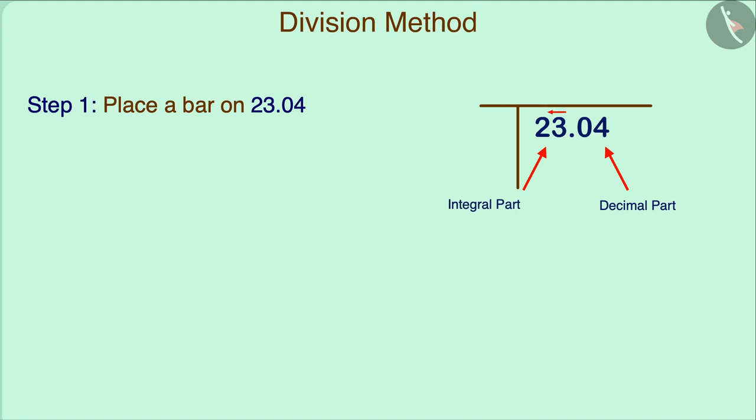Starting from the units place and whole number, we pair the digits on the left side and place a bar on them. Here, we will place a single bar on 23.